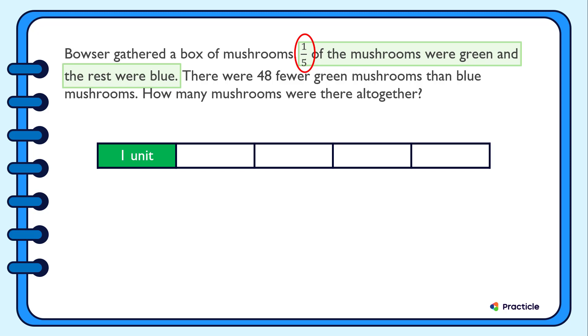Then what about the rest of the parts? The rest of these 1, 2, 3, 4, 4 units represent the blue mushrooms. So far so good?